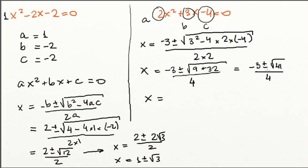So, x, we may find two values. If we do negative 3 plus square root of 41 over 4, and we'll find another value if we do negative 3 minus root of 41 over 4.